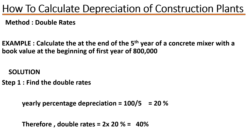The first thing you're going to do is find the double rate, which is the yearly percentage depreciation. We take the total percentage — that is 100 — and divide by the number of years, which gives us 20. Because it's double rates, we multiply by 2, giving us 40%. So our depreciation rate is 40% per year.